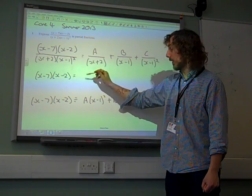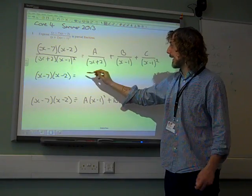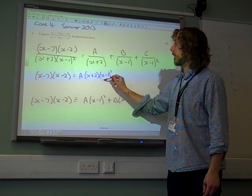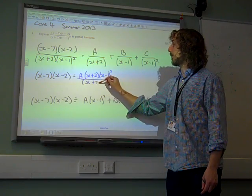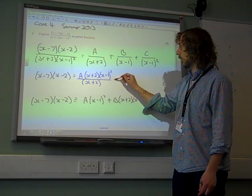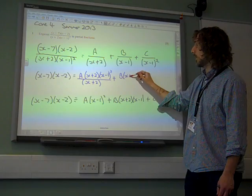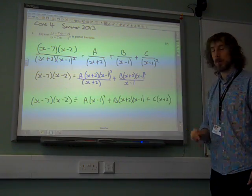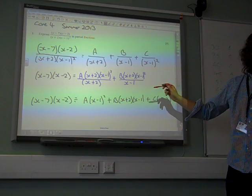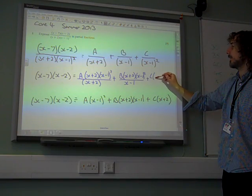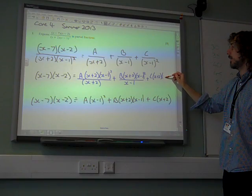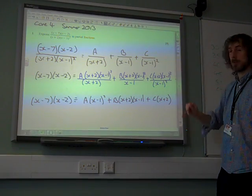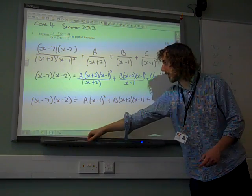Here, we've got a times x plus 2 x minus 1 squared over x plus 2. So we've got b, x plus 2 x minus 1 squared over x minus 1. And we've got c, x plus 2 x minus 1 squared over x minus 1 squared. OK. You've got it? Yeah. Because then it all cancels.